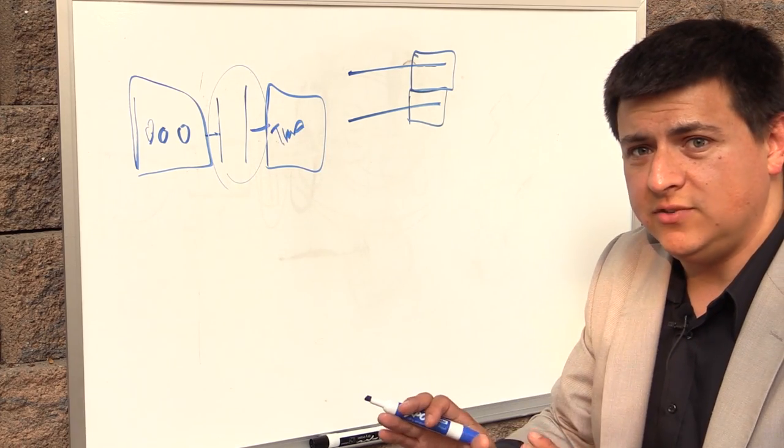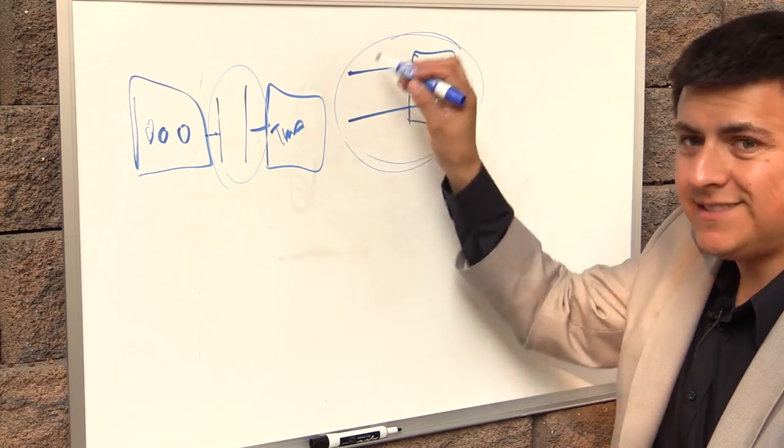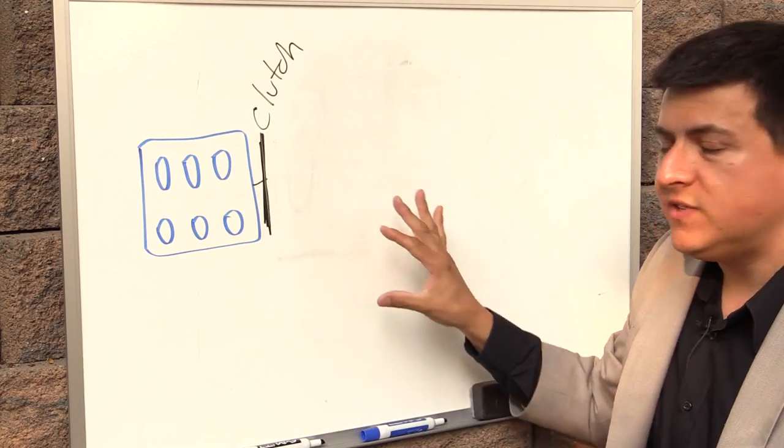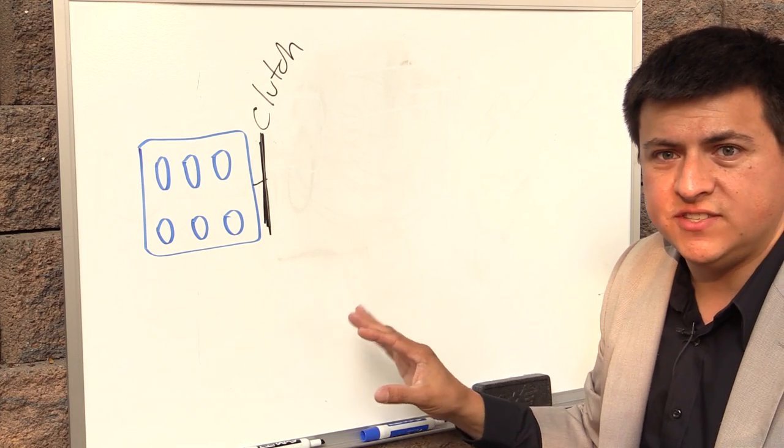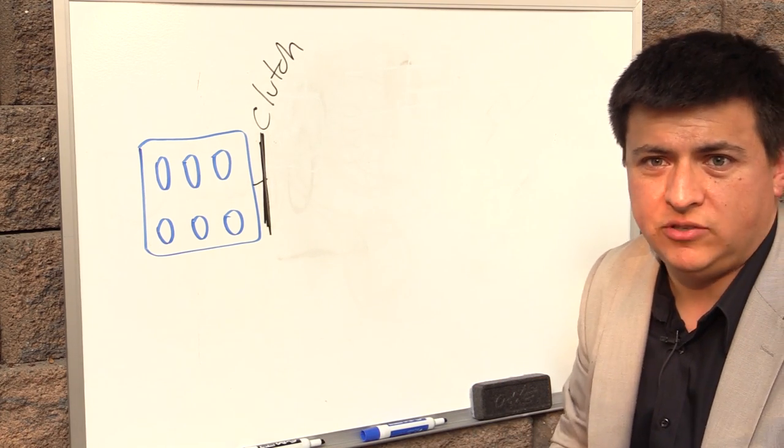Now the other reason that dual clutch transmissions are more efficient than traditional automatics is because of their gear sets. This style of gear set is more efficient than a planetary gear set in general. Now there were some early attempts at realizing this efficiency with what they called roboticized manual transmissions or automated manual transmissions.